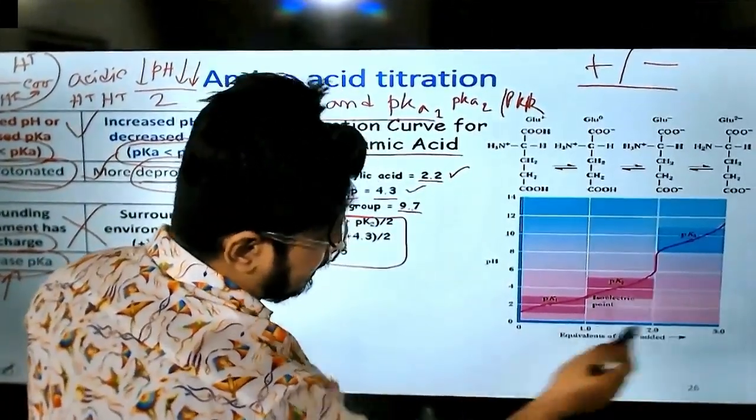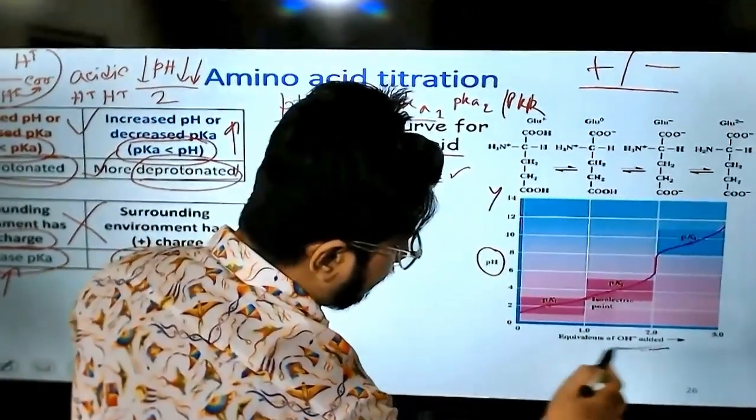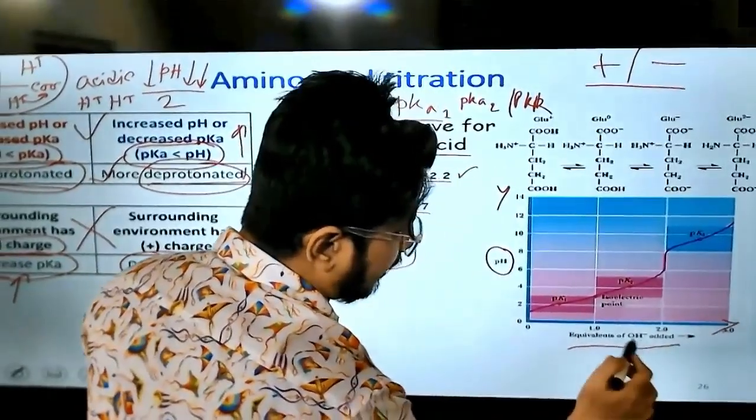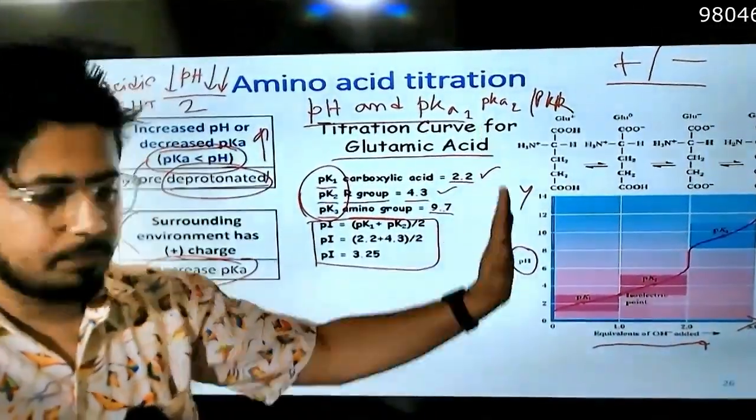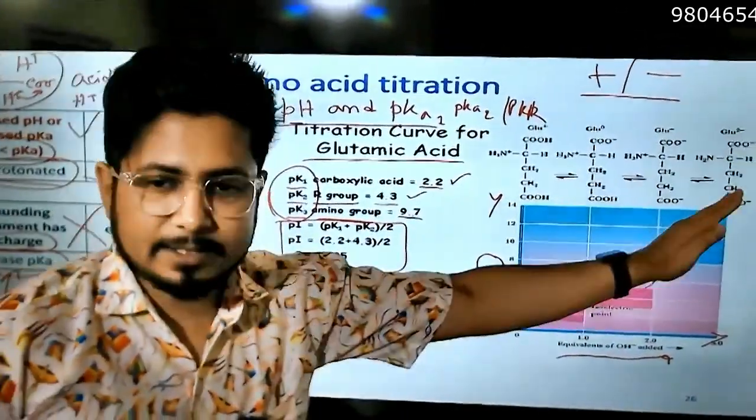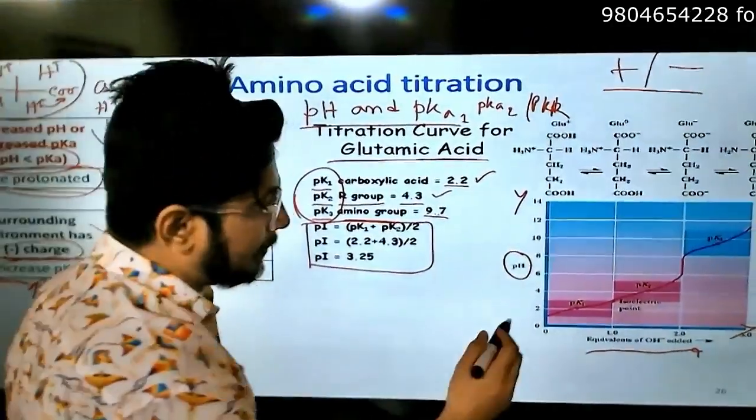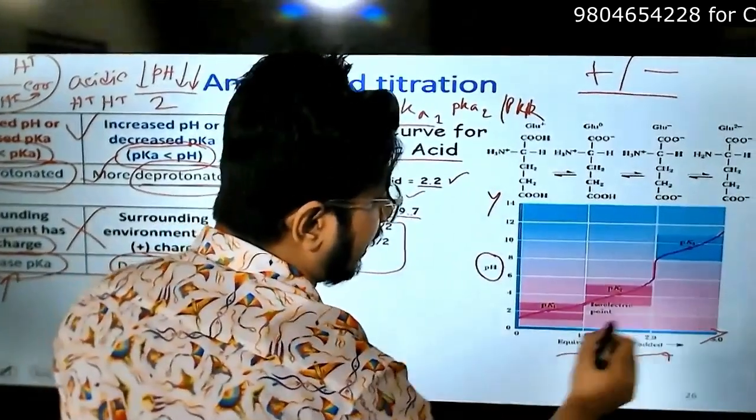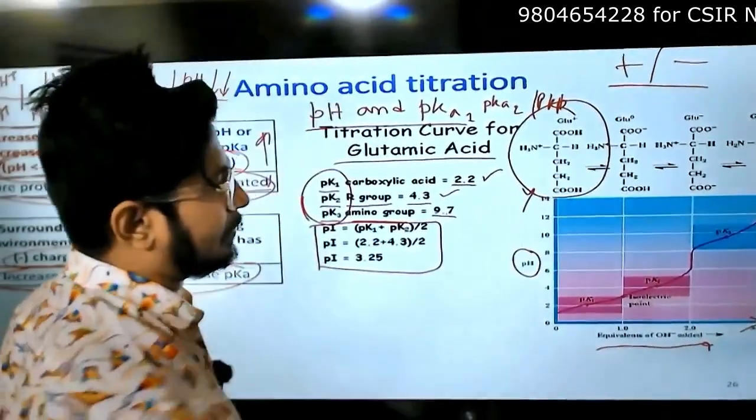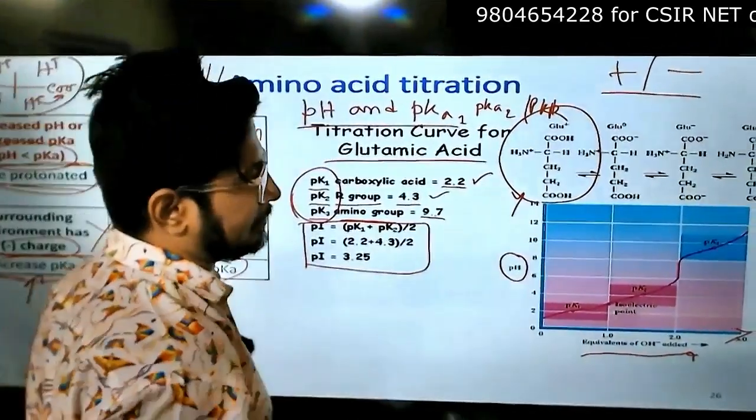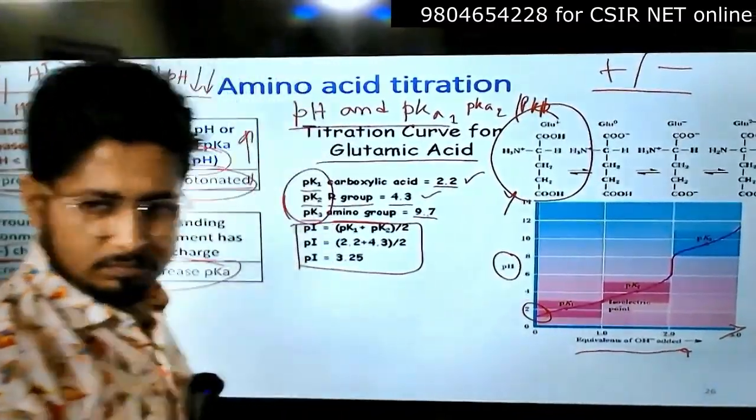pKa1 for carboxylic acid is 2.2, pKa2 for R group is 4.3, pKa3 for amino group is 9.7. What we see in this titration curve - we have pH on the y-axis and hydroxyl concentration on the x-axis. The more we increase pH, OH minus increases. Let's begin with glutamic acid in very acidic conditions.